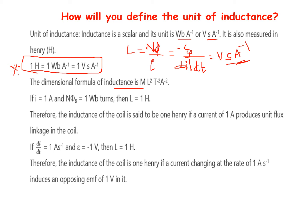First, we know W is equal to QV, so volt is equal to W by Q. W is the work done in joules and Q is the charge. The unit of work is joule, and the unit of charge is coulomb. Joule is Newton meter.